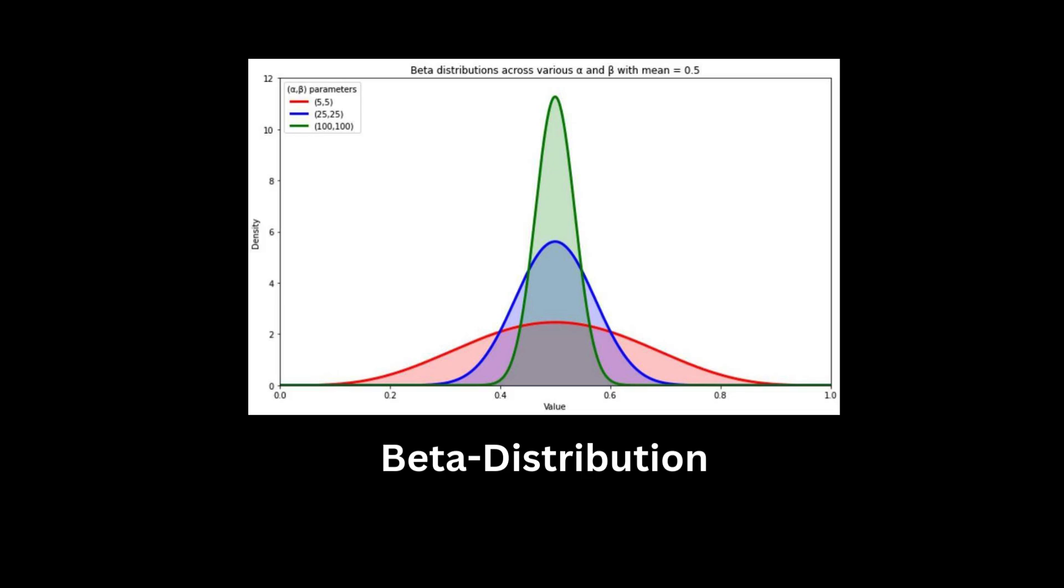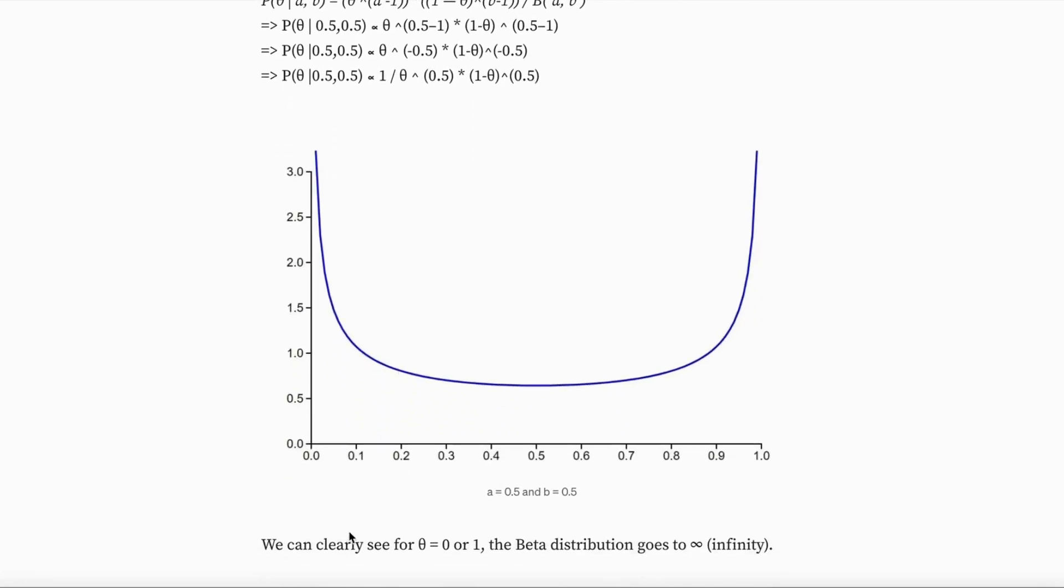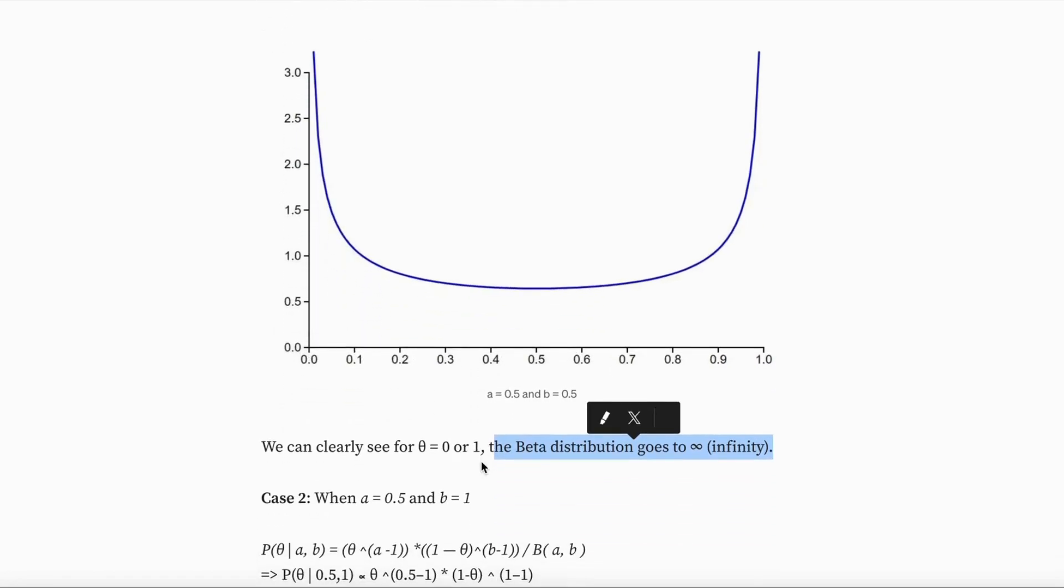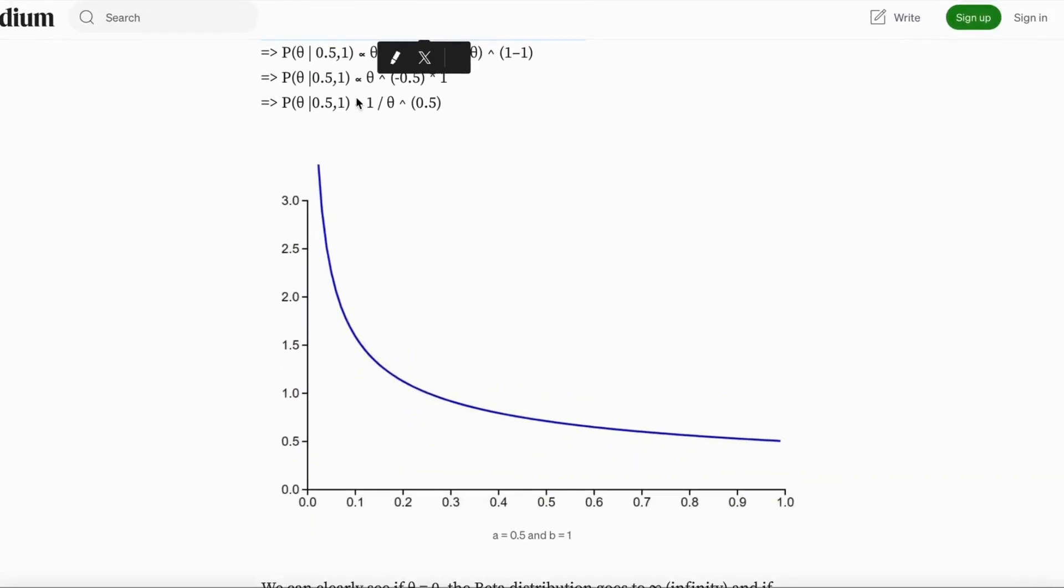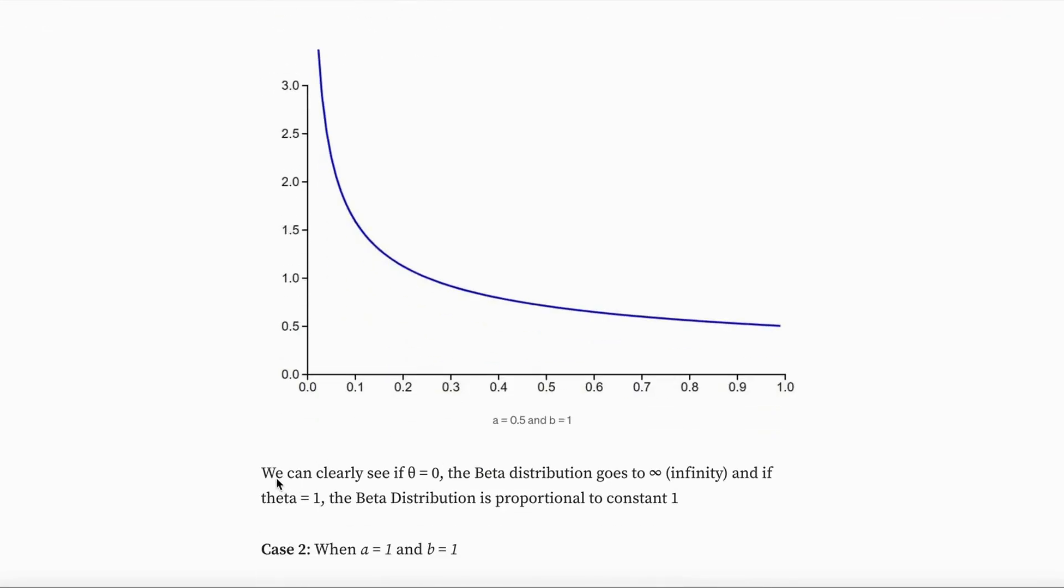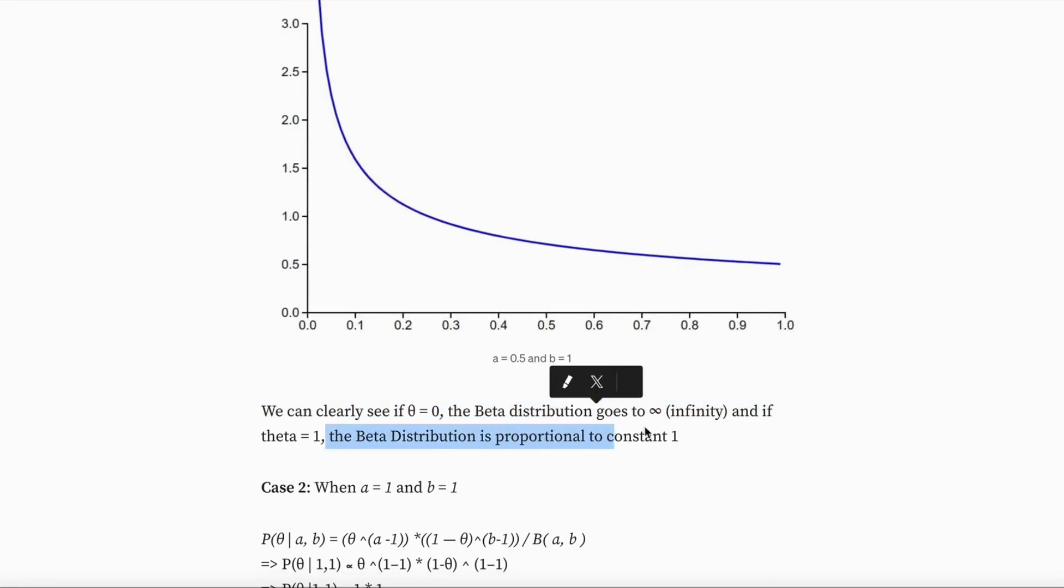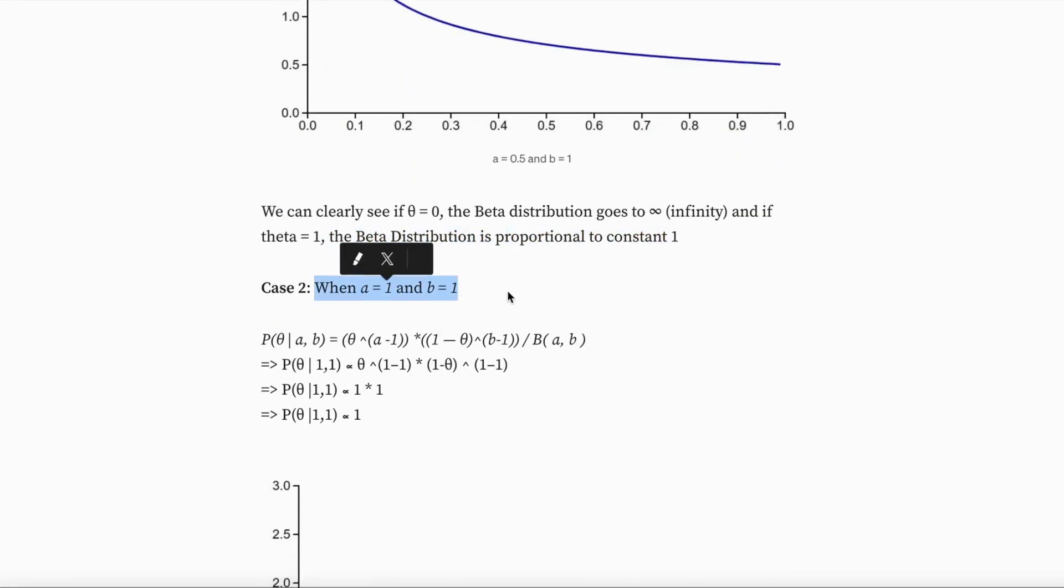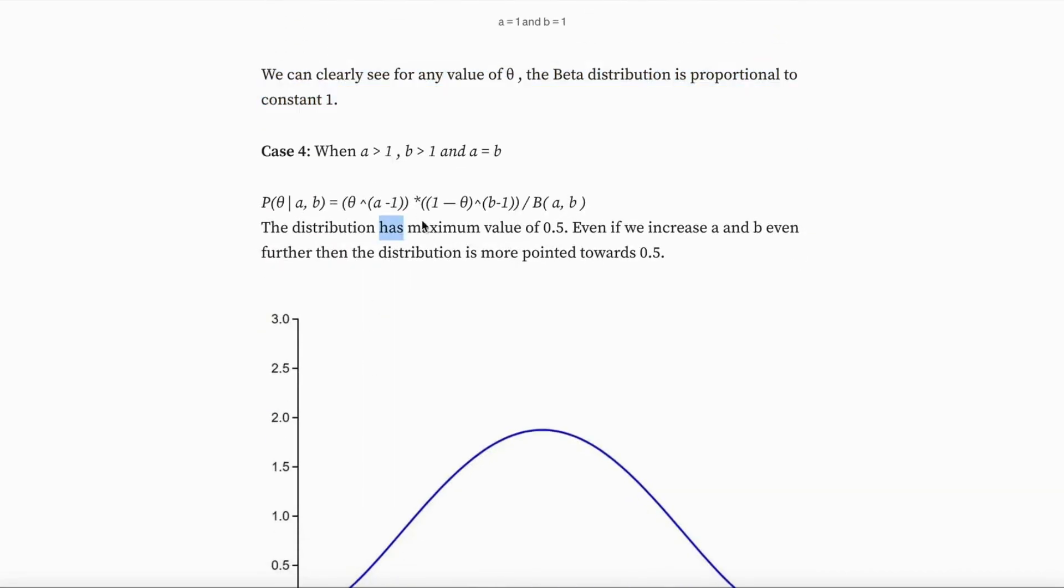So let's look at how alpha and beta values impact our distribution. In the first case, where alpha is equal to 0.5 and beta is equal to 0.5, you get a U-shaped curve. You see that when theta is equal to 0, the Beta distribution goes to infinity. And if theta is equal to 1, the Beta distribution is proportional to constant 1. If alpha is equal to 1 and beta is equal to 1, we can clearly see that for any value of theta, the Beta distribution is proportional to constant 1.